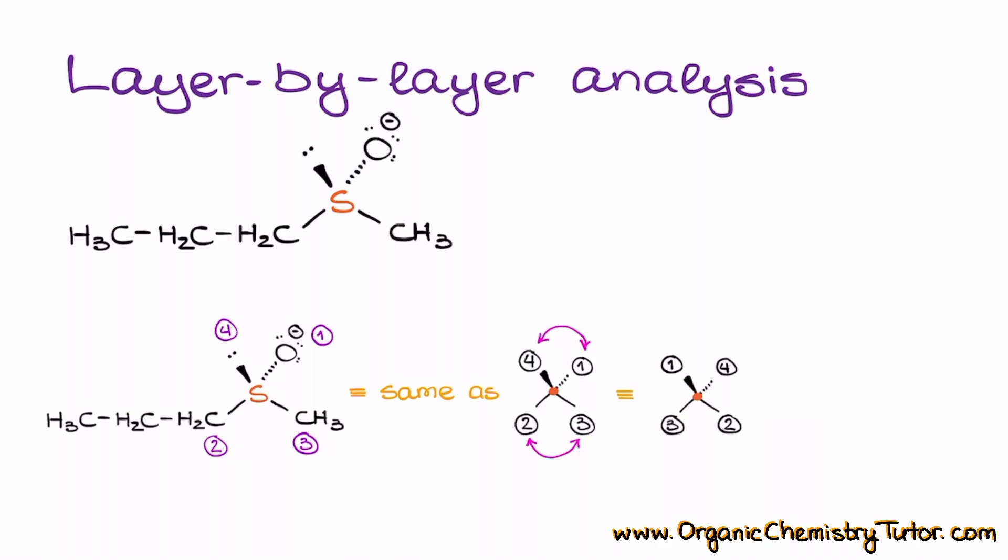Now, I can go ahead and assign the stereodescriptor. Using my Newman projection, I can clearly see that we are going to have a clockwise pattern, and the clockwise pattern results in the R stereodescriptor.